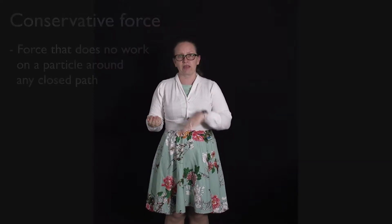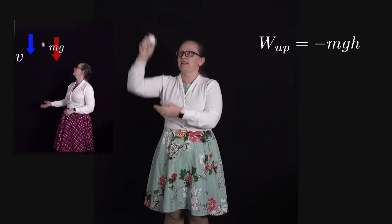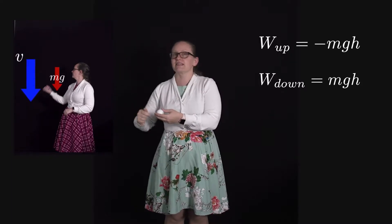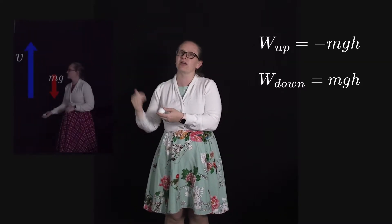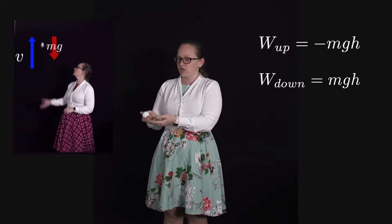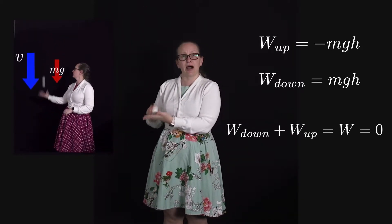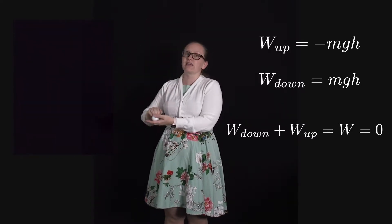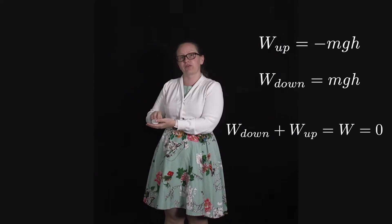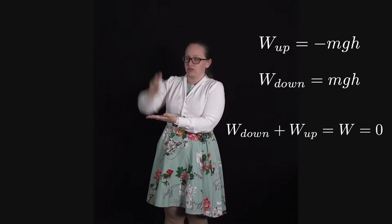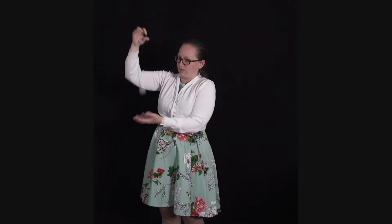We saw with the earth's gravitational field that if I threw a ball up and caught it at the same height, then as it went upwards the gravitational force was pulling it downwards, so we had negative work done. Then as it goes back down, the displacement is down and the force is down, so we've got positive work done — and we saw that these two works were equal and opposite. So if I threw a ball up and it came back down to the same height, there is no net work done along that closed path.